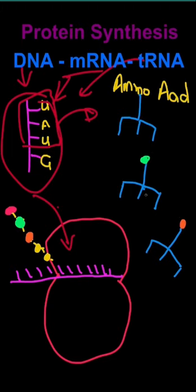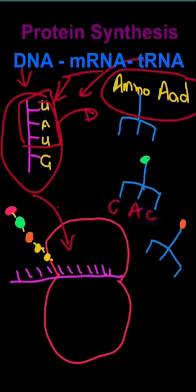The tRNA molecules carrying specific amino acids come and see where they fit in. These different colors represent different amino acids that correspond to different codons and anticodons.